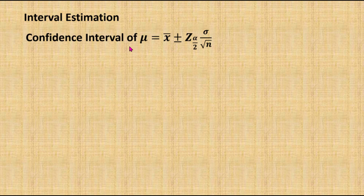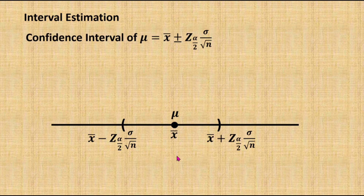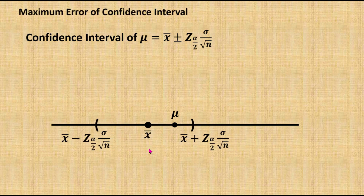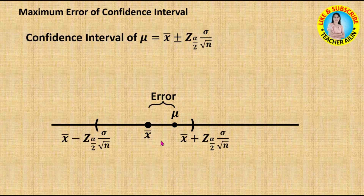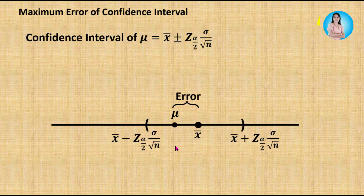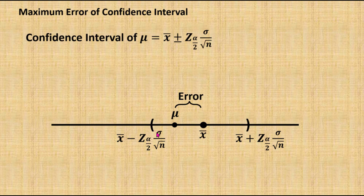For interval estimation, when using a confidence interval to estimate the population mean, the interval produced contains the population mean at a specified confidence level. If the sample mean is different from the population mean, then the difference between the sample mean and the population mean is called the error of the estimation. The sample mean can be less than or greater than the population mean, but this error is still acceptable if the interval is still including the population mean under the specified confidence level.